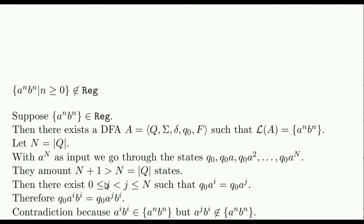Therefore, there exists i and j different from 0 and N such that, after reading i As, we reach the same state that is reached after reading j As.